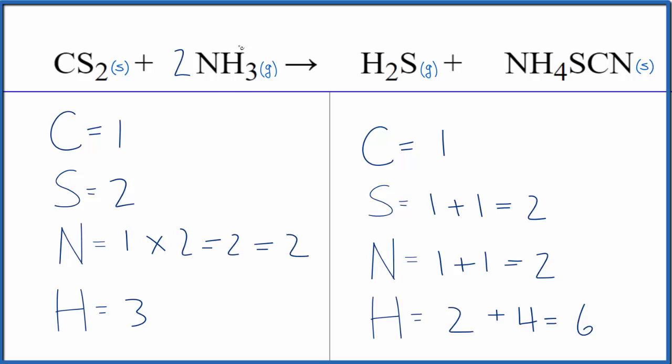And then we have hydrogen. This two applies to everything. Three times two gives us six. And actually we're done. This equation is balanced.